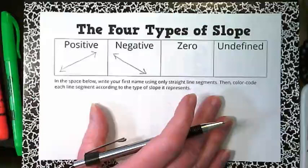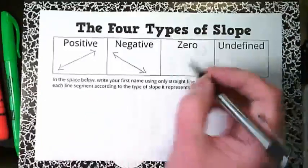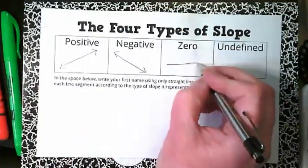Zero slope goes straight across. It is horizontal.